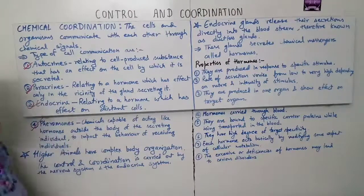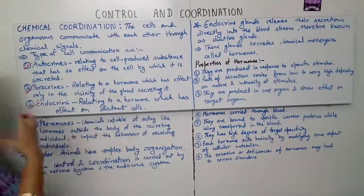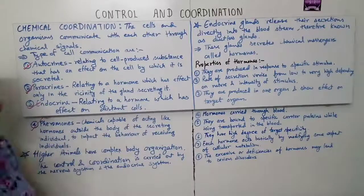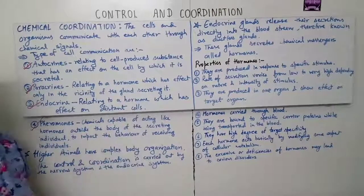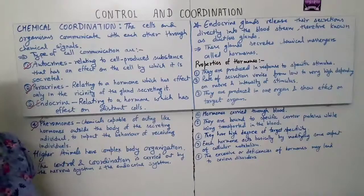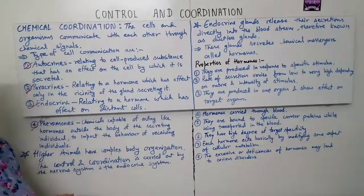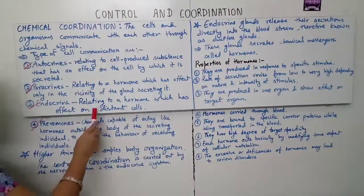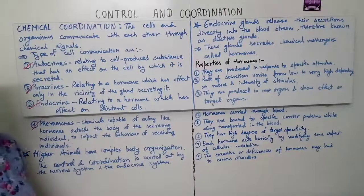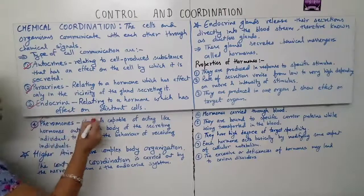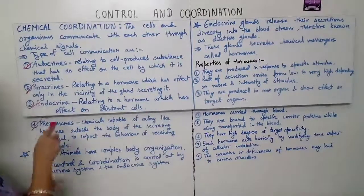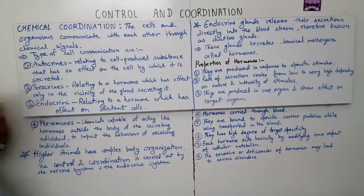Next is paracrine — relating to a hormone which has effect only in the vicinity of the gland secreting it, so on neighboring organs. Next is endocrine, relating to a hormone which has effect on distant cells.